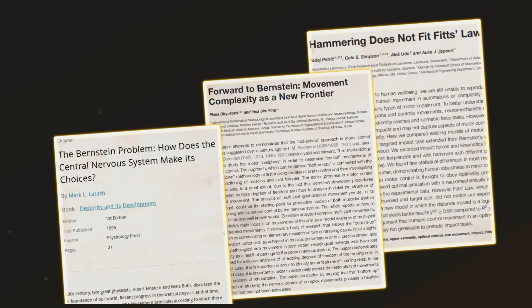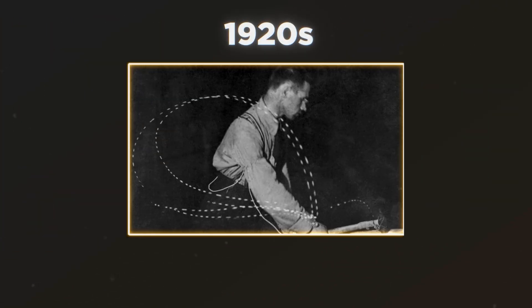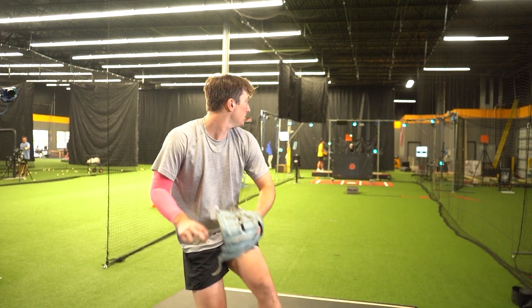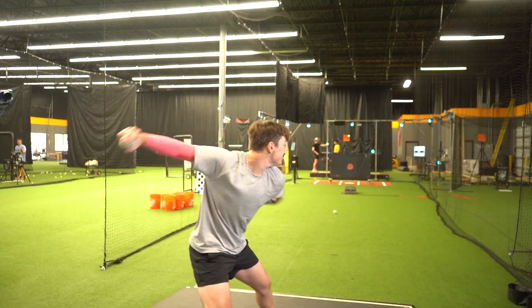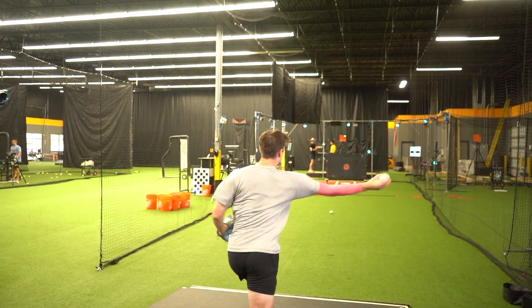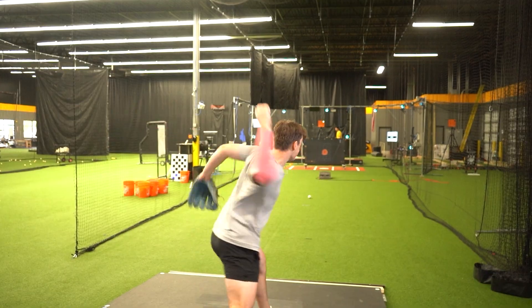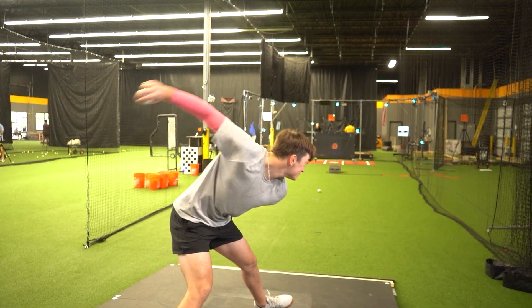Bernstein's hammer is the original motion capture experiment, where a blacksmith was tasked to hit an object over and over. What they found was that the most accurate, expert blacksmiths had the most variation in their movement to solve the problem. This completely flies in the face of conventional thinking.